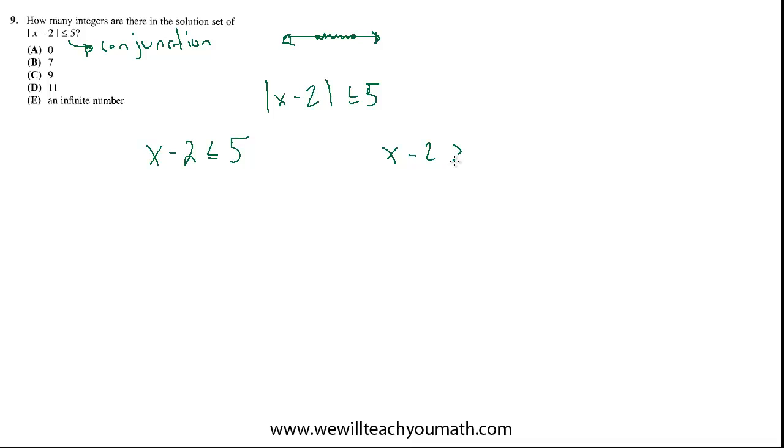But now we switch the inequality to greater than. And we switch the 5 to negative 5. So changing the inequality and taking the opposite of the number on the right. Then we just solve both of these algebraically for x. So here we'll get x is less than or equal to 7. And then here we'll get x is greater than or equal to negative 3.